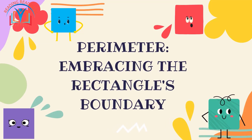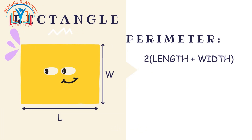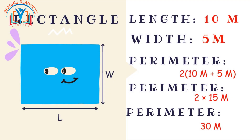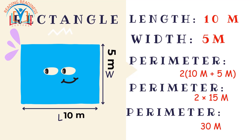To calculate the perimeter of a rectangle, we add up the lengths of all four sides. Since opposite sides are equal in length, we simplify the formula to: Perimeter = 2 × (length + width). For example, a rectangular playground with a length of 10 meters and a width of five meters has a perimeter of 2 × (10 m + 5 m) = 2 × 15 m = 30 meters.